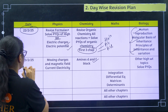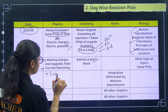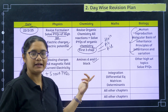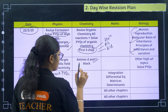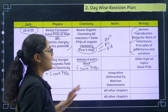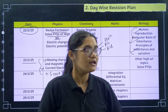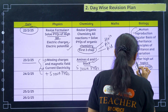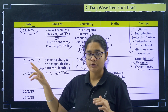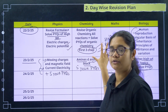Coming to 23rd February: revise moving charges and magnetic field and current electricity, then solve five years of PYQs. For chemistry on 23rd, revise amines and D and F block. Biomolecules is not a high-weightage topic, so I'm not including it. Revise amines and D and F block, then solve five years of PYQs. For biology on 23rd, since you revised it the previous day, you need time for your brain to recall — so solve five years of PYQs. In these two days, you are not revising the entire syllabus, only high-weightage topics. Do not waste time on other topics.